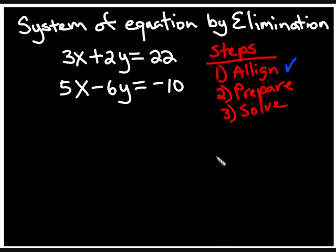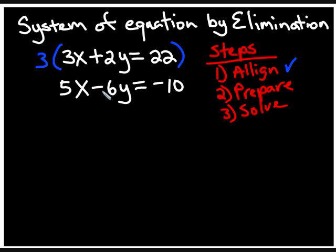Step number two is to prepare for elimination. Elimination involves combining both equations together, but in the process of combining we need two like values with opposite signs that are going to cancel. The coefficients of a variable need to cancel. We need to find a common number between three and fifteen, but looking at the y's we have two and six — the common number is six. If I multiply the top equation by three I'll get six, and we need opposite signs so they can eliminate.